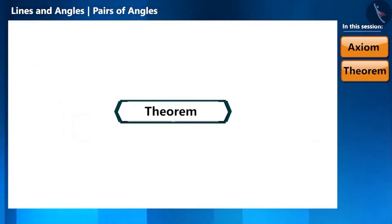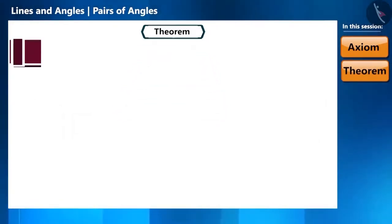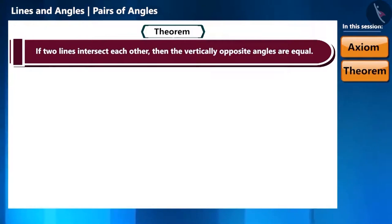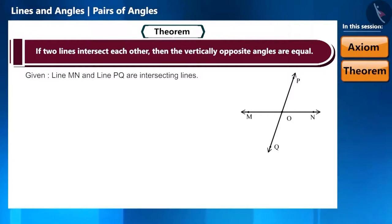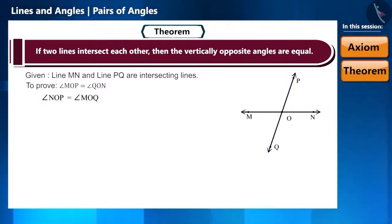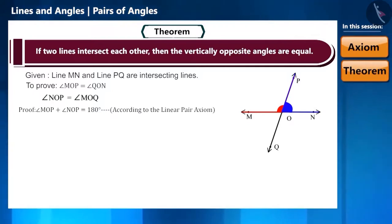Now we move on to the next theorem, which is related to two lines. If two lines intersect each other, then the vertically opposite angles are equal. Let's convert the ray OP into a line in the same given figure. According to the theorem, we have to prove that angle MOP is equal to angle QON and angle NOP is equal to angle MOQ. So let's start. Keeping the ray OP in mind, can we say that angle MOP plus angle NOP is equal to 180 degrees?